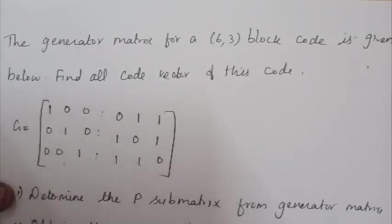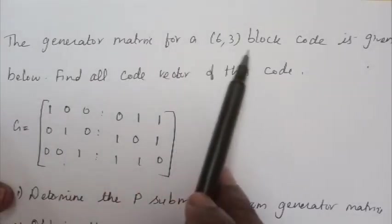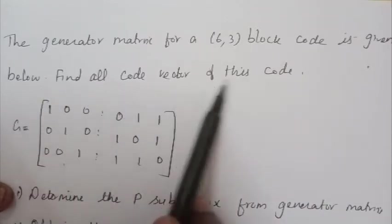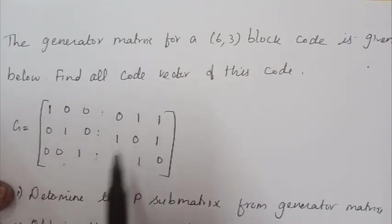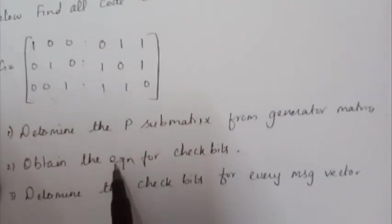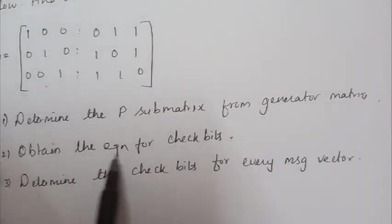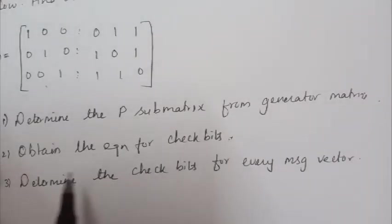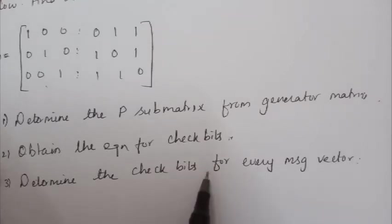Hello all. In this video, let's see an example for linear block codes. The question is: the generator matrix for a (6,3) block code is given. Find the code vector for all the codes. The sub-questions are: determine the P submatrix from the generator matrix, obtain the equation for check bits, and determine the check bits for every message vector.